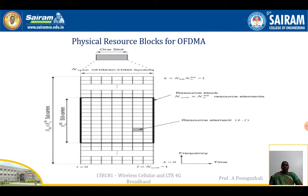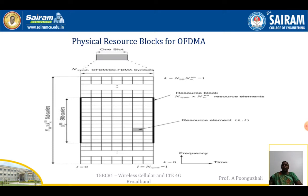The physical resources in the downlink in each slot are going to be decided by the time-frequency grid. The time-frequency grid is called the resource grid. Here, the x-axis denotes time, where each block is represented by an OFDMA symbol, and the y-axis represents the frequency components — the OFDMA subcarriers.